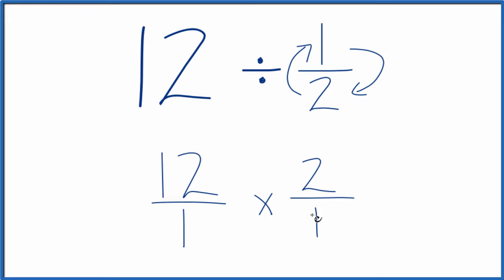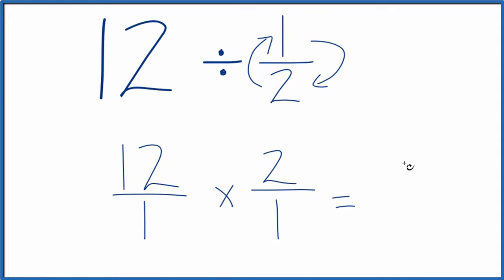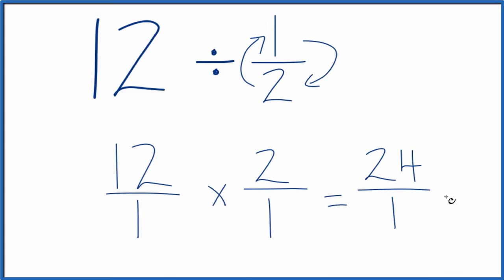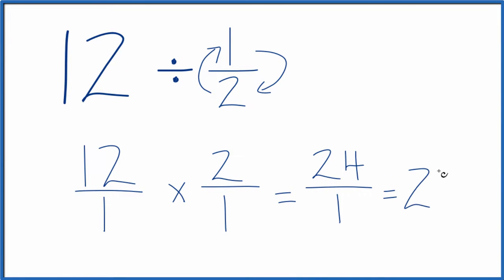So 12 times 2 over 1, when you're multiplying fractions, you multiply the numerators and then the denominators. 12 times 2, that's 24. 1 times 1, that's 1. And 24 divided by 1, that's just 24.